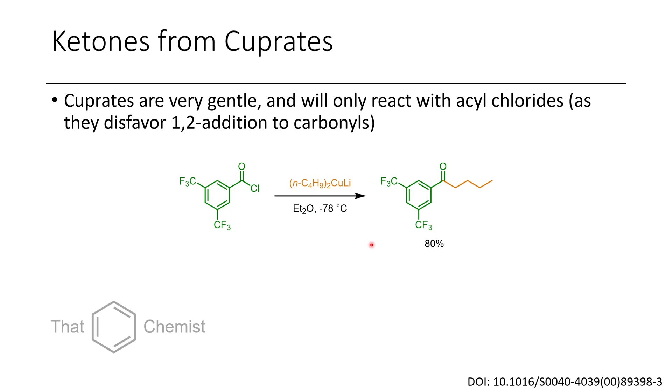Now another reaction that you can do with alkyl cuprate species is you can convert acyl chlorides directly to ketones. And so you might recall that with Grignard reagents you have to create a Weinreb amide or use a nitrile, but if you use a cuprate you can get around this problem. So in this case we see this 3,5-bis trifluoromethyl benzoyl chloride is converted to this butylated ketone product. So this is a very useful reaction to have in your back pocket, especially in retrosynthesis or paper synthesis.